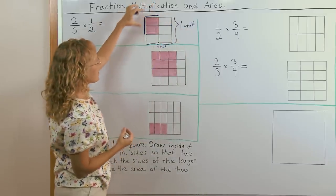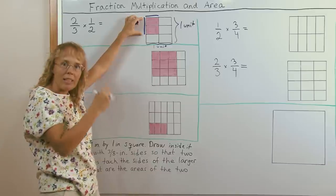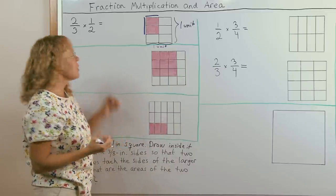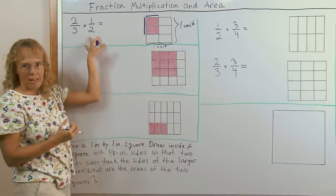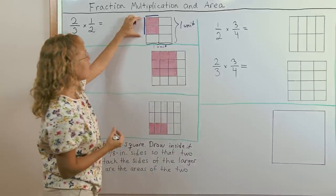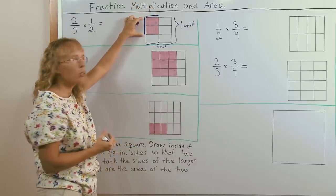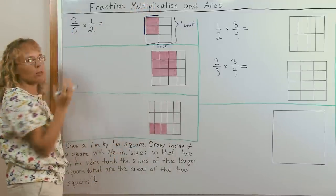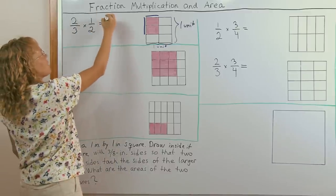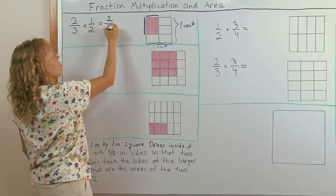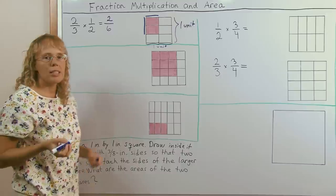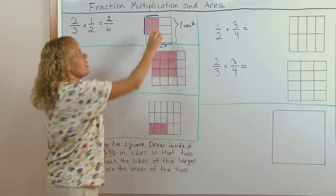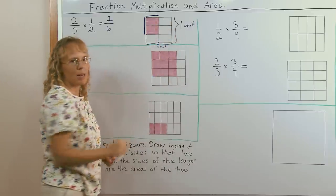And now with this and this length, I will form another rectangle. This here will make a rectangle whose area is two thirds times one half. It is this times this. And this is two thirds of a unit, this is half a unit. So I multiply.